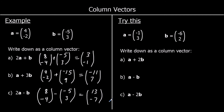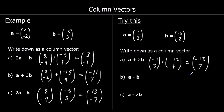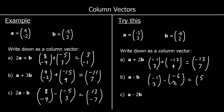OK, one for you to try. So A plus 2B. A is negative 1, 3. And 2B would be negative 12, 4. Adding them together: negative 1 and negative 12 would make negative 13, so 13 left. And 3 and 4 make 7. For A minus B: negative 1 take away negative 6 — so negative 1 plus 6 is 5. And 3 minus 2 is 1. So if we went along A and then backwards along B, we'd go 5 to the right and 1 up.